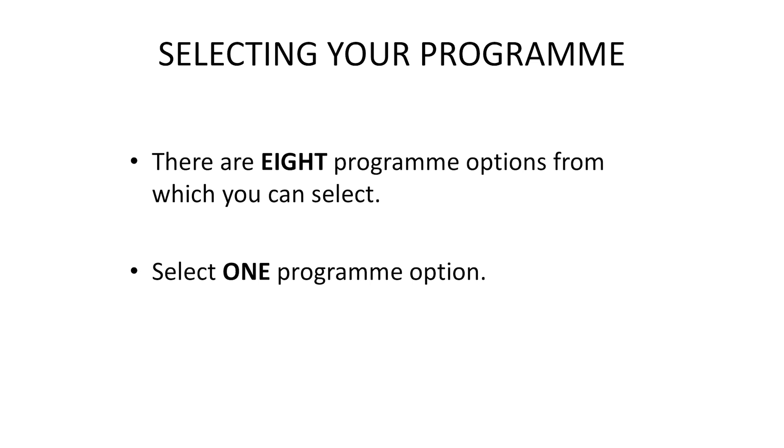In selecting your program, please note the following. There are eight program options from which you can select one program option. For example, you can select African Studies or you can select Media and Literature. What this means is that in selecting African Studies, you must select subjects only from that option. To do this, you'll select one program option, then select four pairs of subjects from that program option.